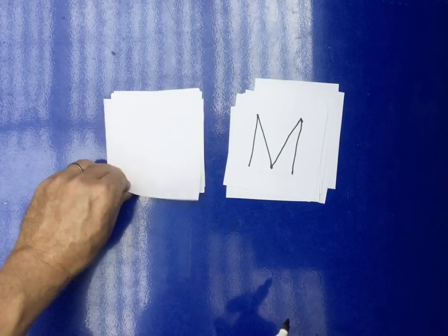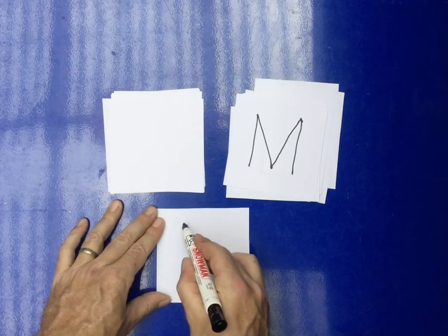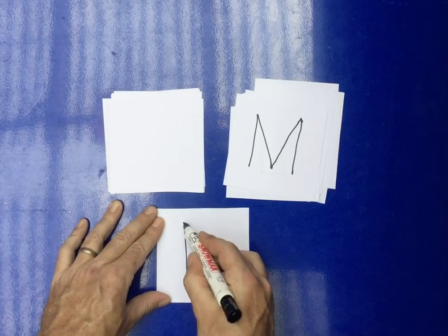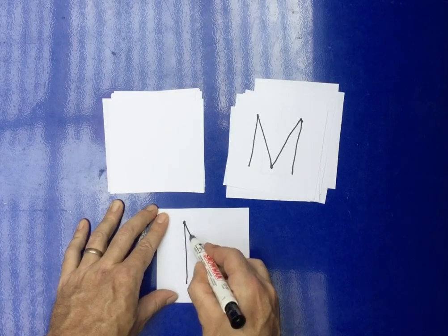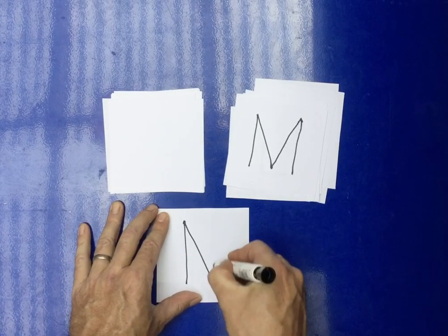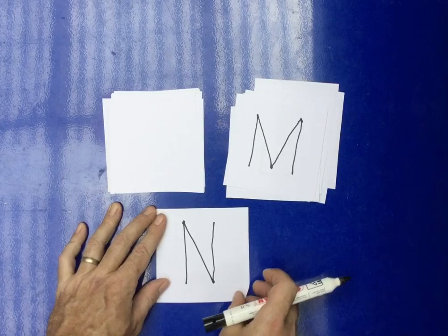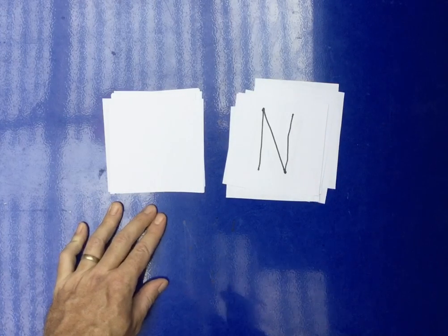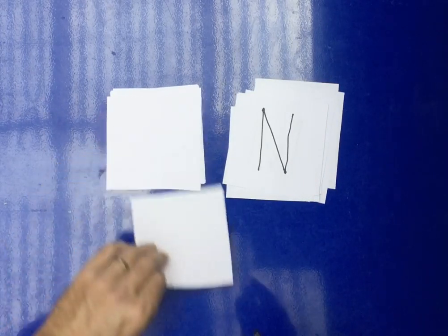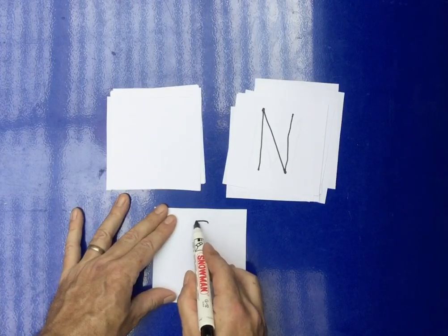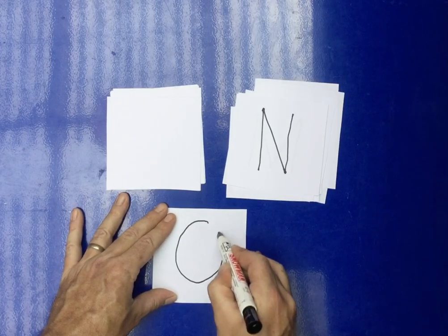The N is almost the same. We go down, go back to the top, we go down and up. L, M, N, O. The O is very easy. It's a circle.